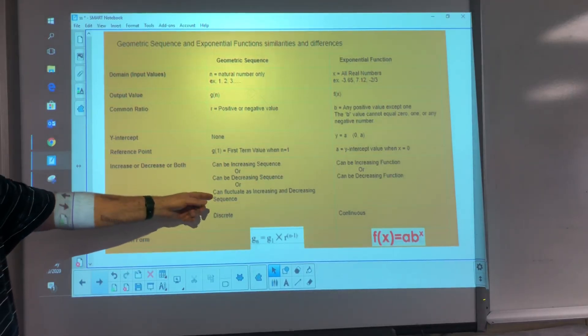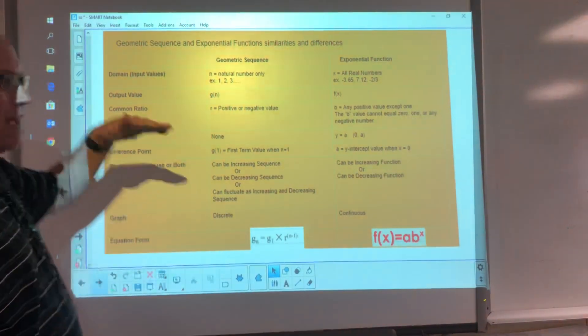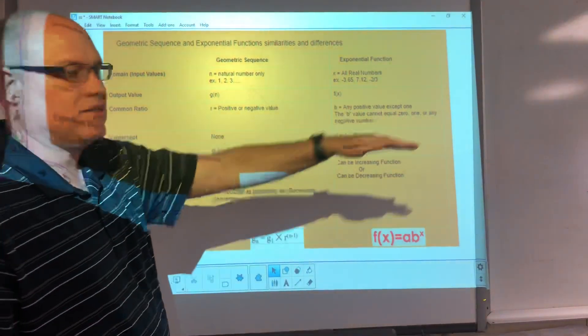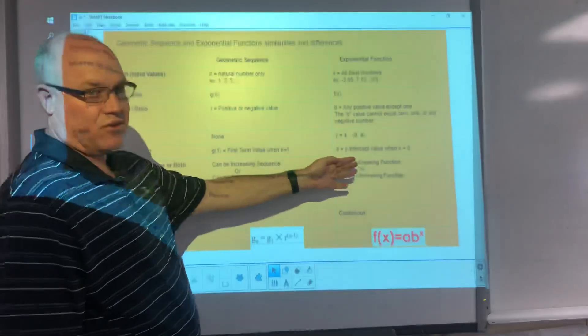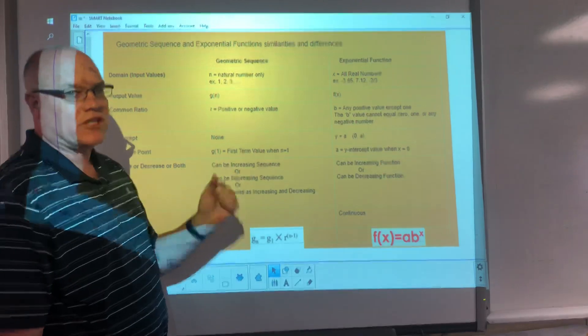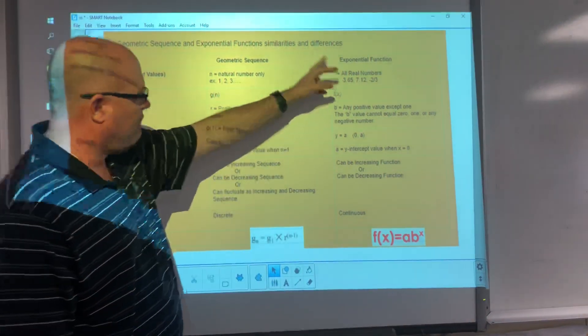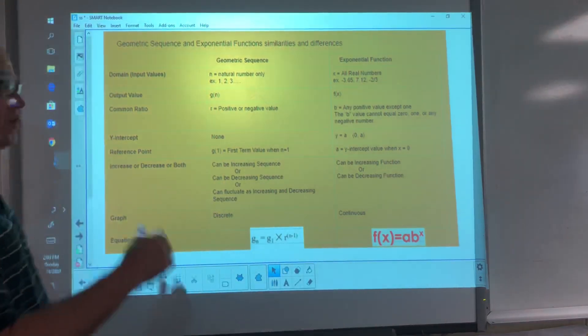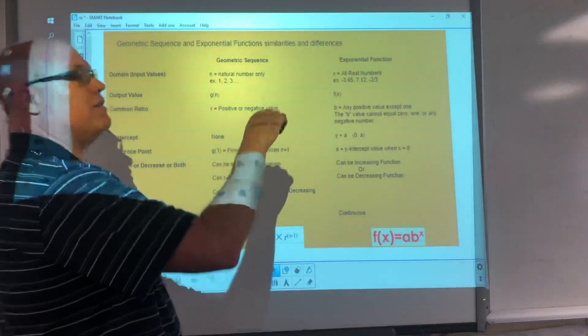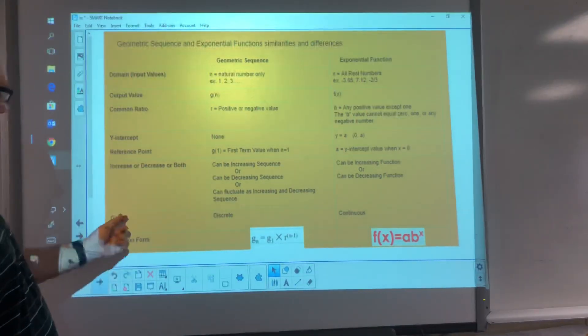I didn't put it on here. We could have a situation where it's constant. Like if r was one, it would be the same number. So that would be a constant function. I just didn't put that down on this chart. With our exponentials, it's either going to be increasing or it's going to be decreasing. There's not going to be this up and down, because the r value, in this case the b value, is going to be a positive number. So it's going to be either an increasing function or it's going to be a decreasing function, one or the other.